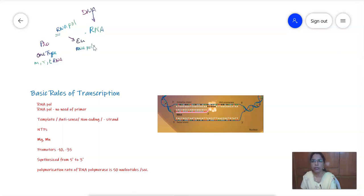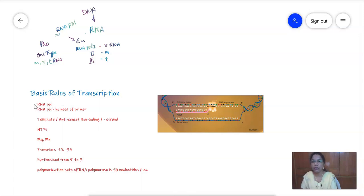In eukaryotes there are three types of RNA polymerases: RNA polymerase 1, RNA polymerase 2, and RNA polymerase 3. RNA polymerase 1 synthesizes rRNA, RNA polymerase 2 synthesizes mRNA, and RNA polymerase 3 synthesizes tRNA.